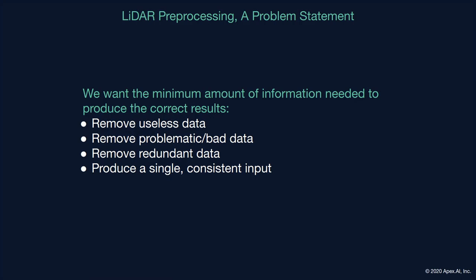There are some different operations we can use to reduce complexity and get closer to our sufficient statistic. We can remove useless data which won't affect our result and just add CPU cycles. We can also remove problematic or bad data which could negatively affect our result. We can also remove redundant data, which can also affect our result by adding additional cycles. And finally, we want to produce a single consistent output, which allows us to more easily use the inputs for downstream algorithms.